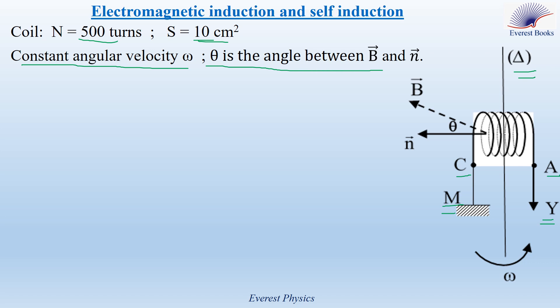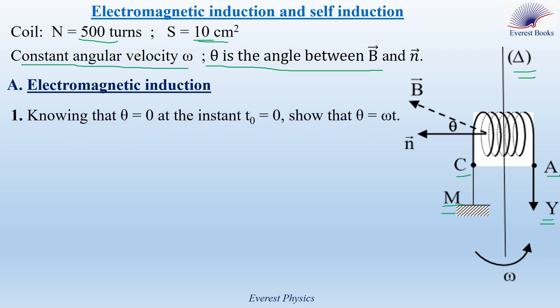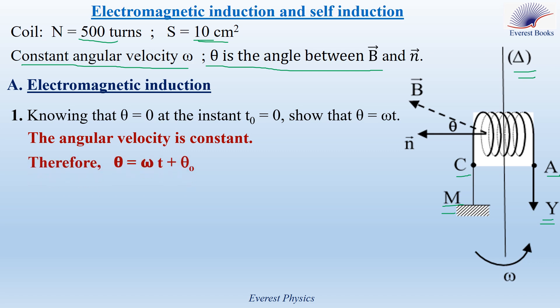Let's start with the electromagnetic induction phenomenon. Question number one: knowing that theta is equal to zero at time zero, show that theta is equal to omega t. The angular velocity is constant, which means that this is a uniform rotational motion. The time equation of a uniform rotational motion is given by theta is equal to omega t plus theta zero. But theta zero is equal to zero, so we still have theta is equal to omega t.